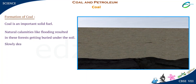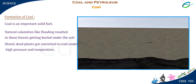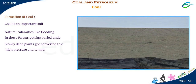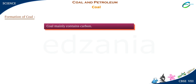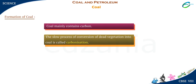Slowly, dead plants got converted to coal under high pressure and temperature. Coal mainly contains carbon, and the slow process of conversion of dead vegetation into coal is called carbonization.